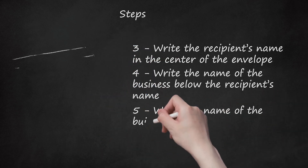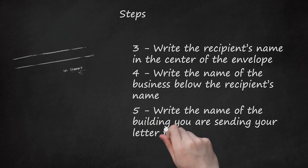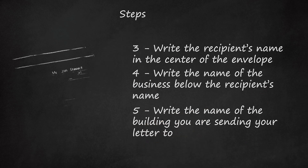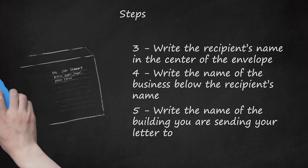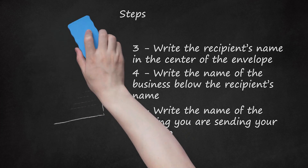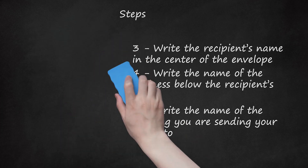Step 5. Write the name of the building you are sending your letter to. This should be written on the line below the business's name if you are sending a business letter, or the recipient's name if you chose not to include a business name. Note that if the building you are sending your letter to has a street number, you do not need to include the building's name. For example, if the building's name is Pilton House, you would now write: Mr. Jim Stewart, British Imports, Exports, Pilton House.